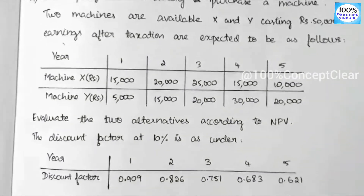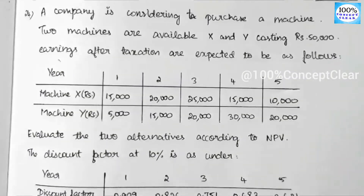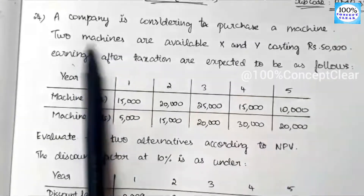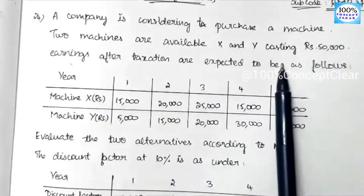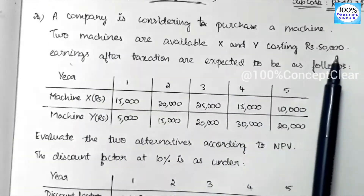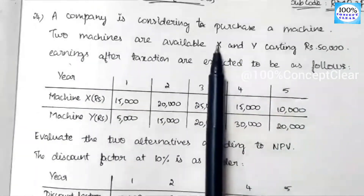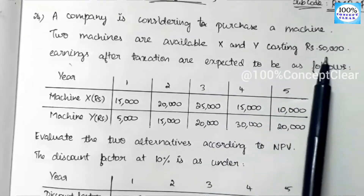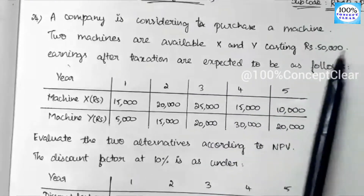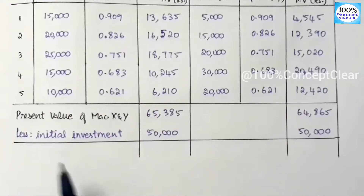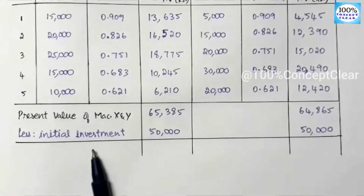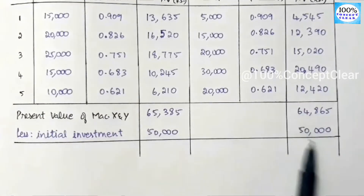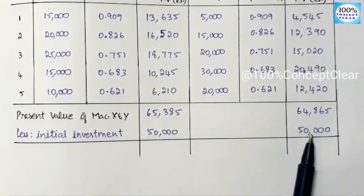We now subtract the initial investment from the total present value. Both machines cost 50,000, so machine X initial investment = 50,000 and machine Y initial investment = 50,000. NPV = total present value minus initial investment.